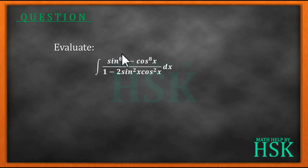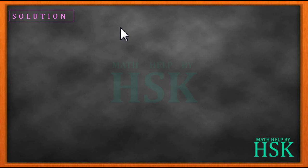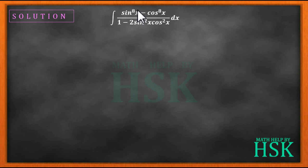In this question we have to evaluate the integral of (sin⁸x - cos⁸x) divided by (1 - 2sin²x cos²x) with respect to x. This is a complex expression containing a lot of terms.